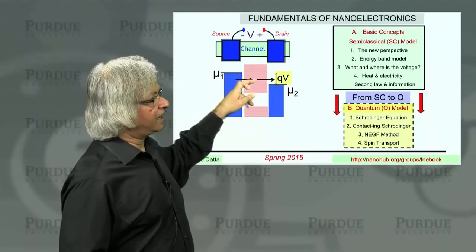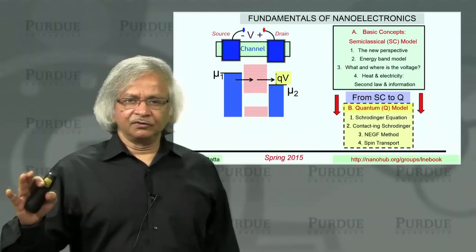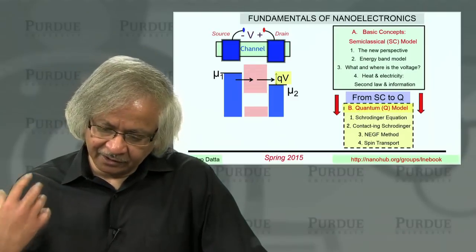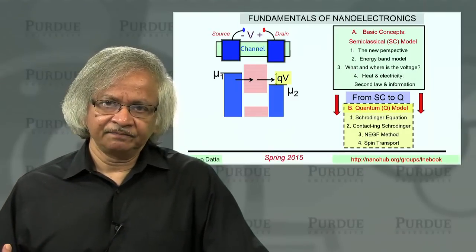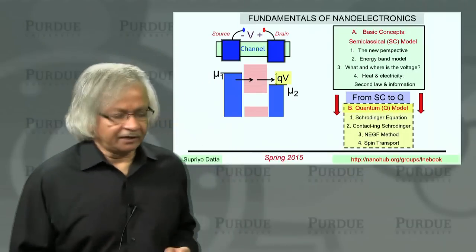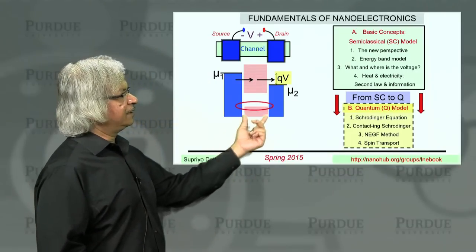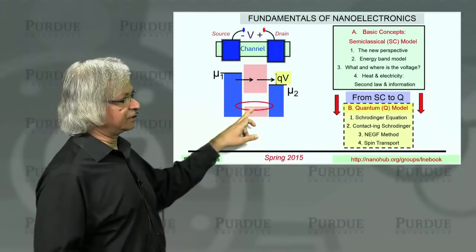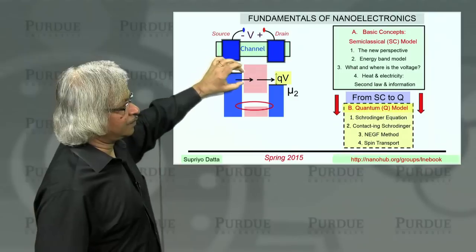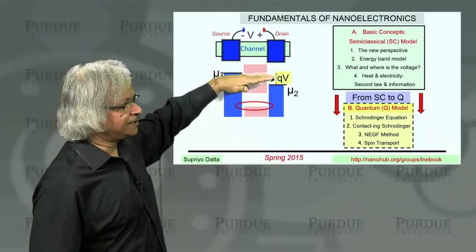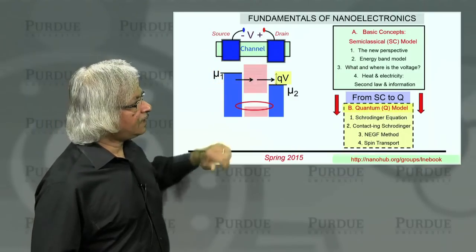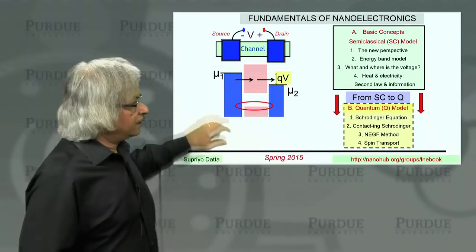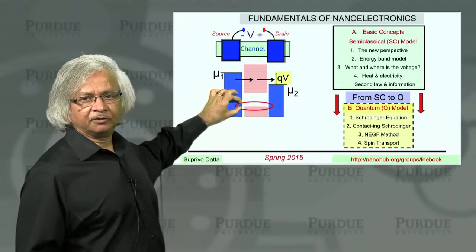Electrons keep coming in and keep getting pulled out. And this viewpoint is very different from what you normally learn in freshman physics, where the thinking is that electrons are driven by electric fields. When you think of electrons as being driven by electric fields, it's hard to understand why the electrons down here do not contribute to current flow. Of course, there is no doubt that these electrons don't. It is generally accepted that current flow is due to only those states right around the electrochemical potential. From this viewpoint that we talked about in Part A, it is easy to see why these do not contribute to current flow.